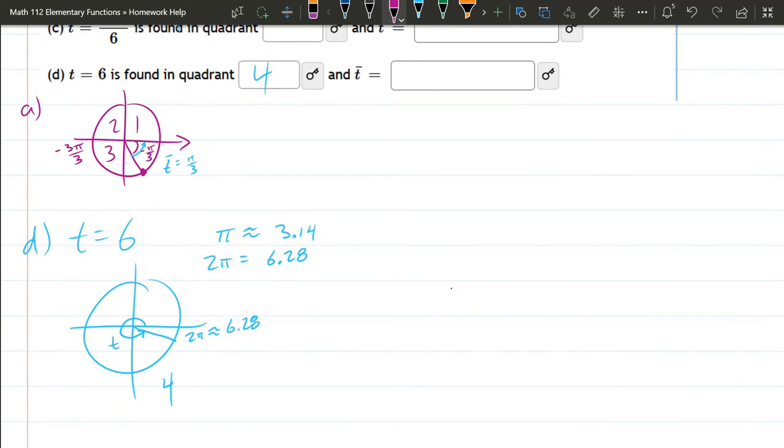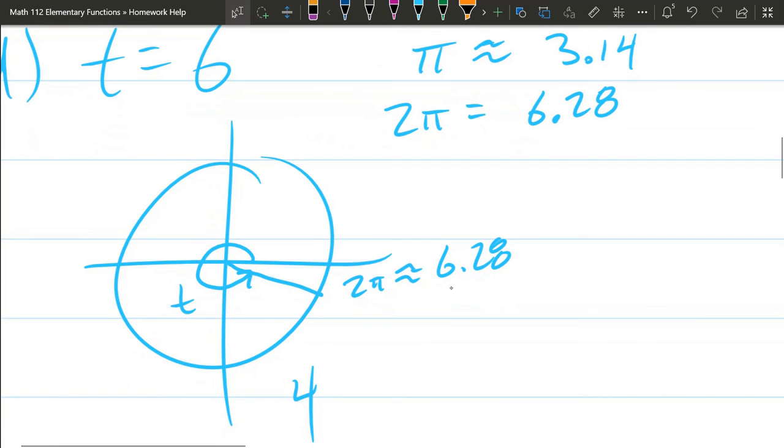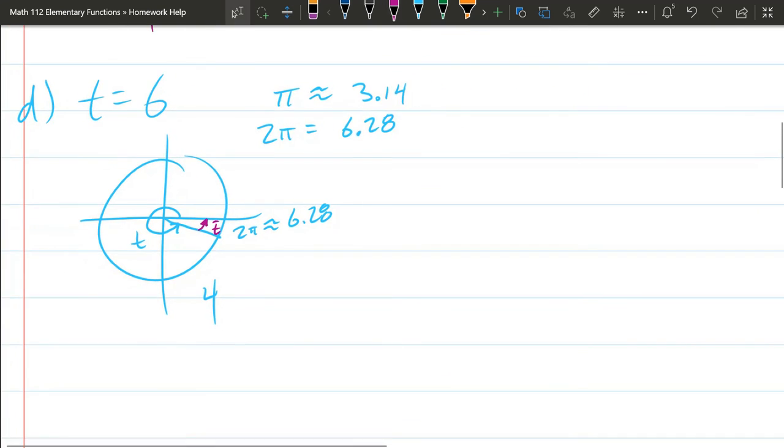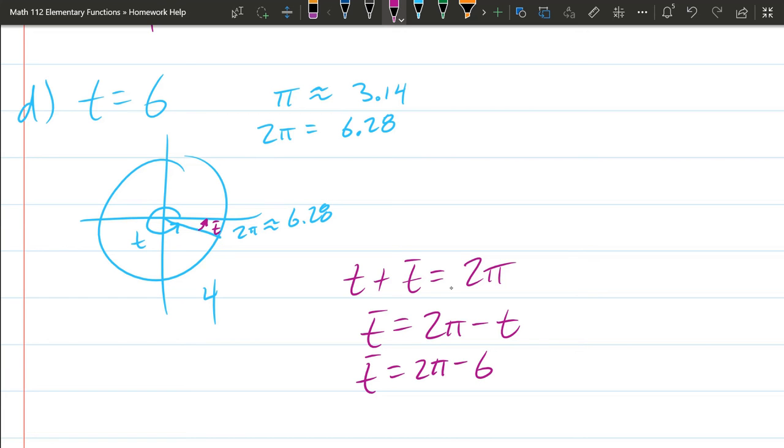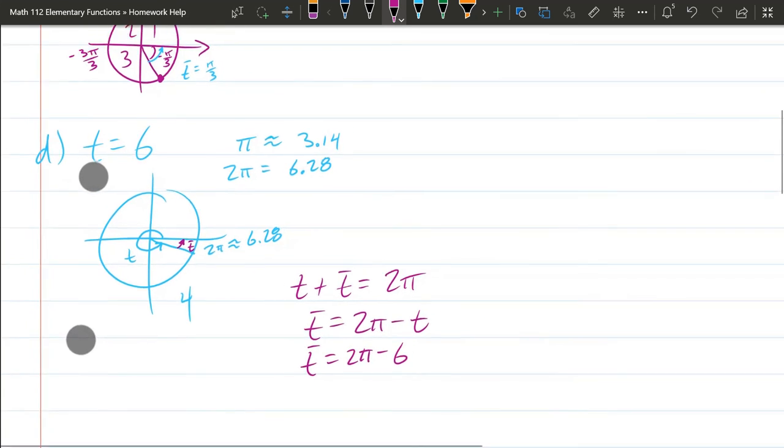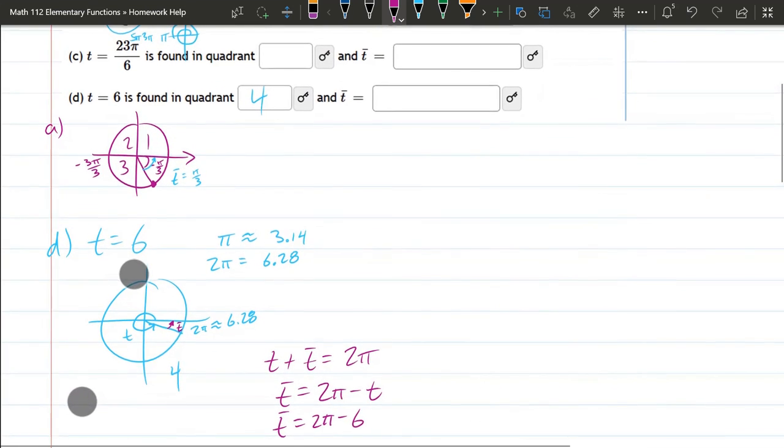Now, tricky part, reference angle. So remember, reference angle, smallest positive angle, easy to draw. Right there. That's t bar. How in the world do we measure that? Well, here's one way to do it. What is t plus t bar? If you look, that's one full rotation. That's 2π. So how do you solve for t bar? Pretty easy. Subtract t. T is 6. There we go. 2π minus 6 is t bar. That's exact because π is in there, not an approximation.